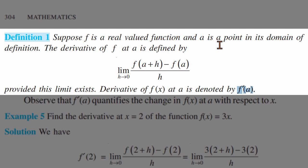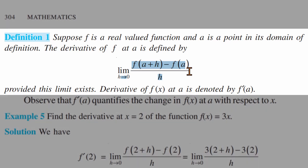That value is called f dash of a. This is calculated using the first principle. You can also calculate it using the formula — we use this limit definition.